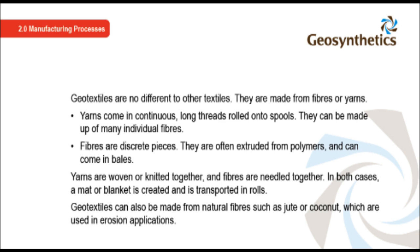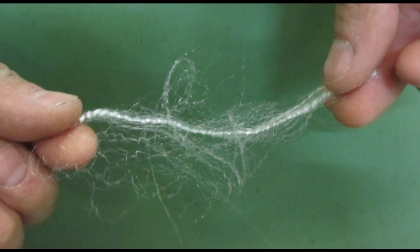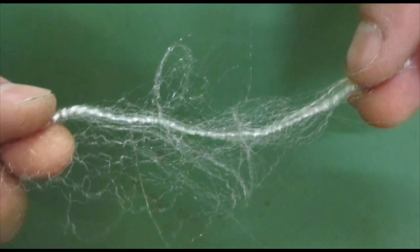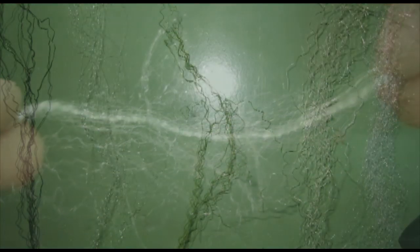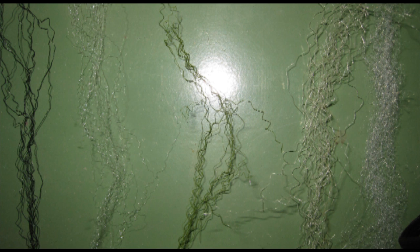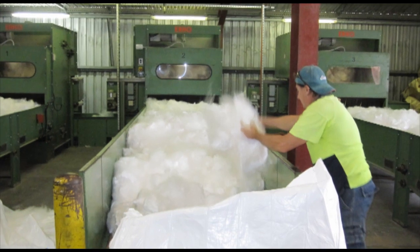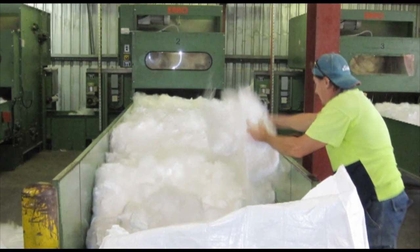Yarns are woven or knitted together, and fibres are needled together. In both cases, a mat or blanket is created and transported in rolls. Geotextiles can also be made from natural fibres such as jute or coconut, which are used in erosion applications. Different fibre types are distinguished by their thickness, length and crimp, as well as strength, UV resistance and colour. Fibres are transported in bales, which are opened and spread to commence the manufacturing process.